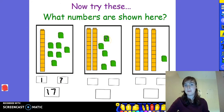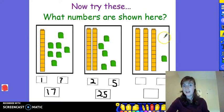In the second box, I can see 1, 2 rods of 10. And I can see 1, 2, 3, 4, 5 ones or 5 cubes. I know that there are 25 cubes in this box.